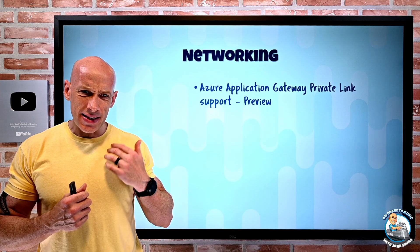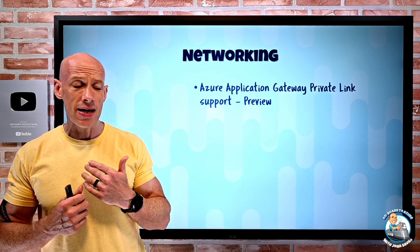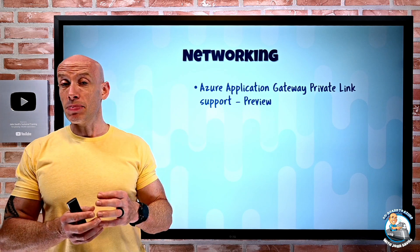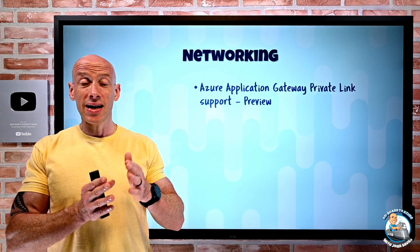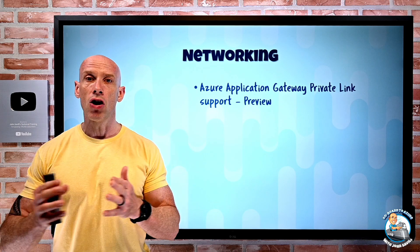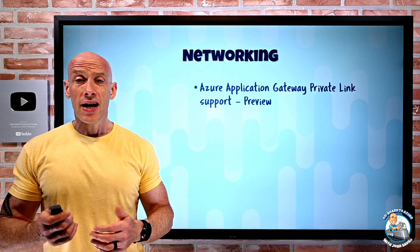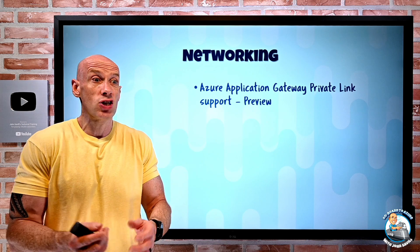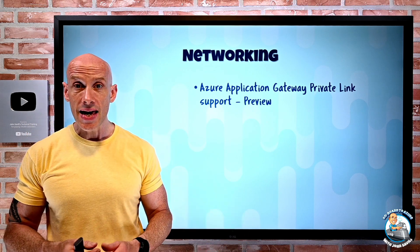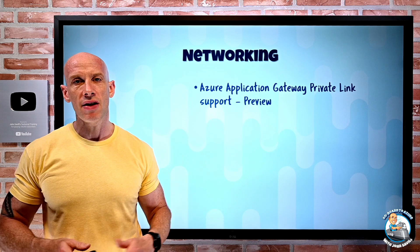I get about 64,000 concurrent TCP connections per IP, so that subnet likely doesn't need to be super big unless you have a really large-scale use of that Azure App Gateway. And once I've got those private endpoints set up, I could just disable the public IP that's normally used for the App Gateway, if I wanted to.